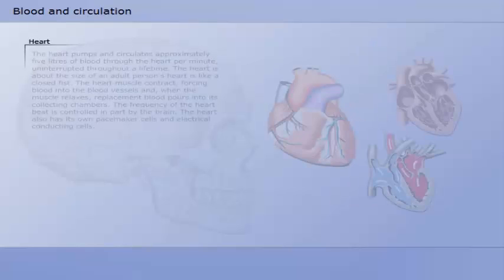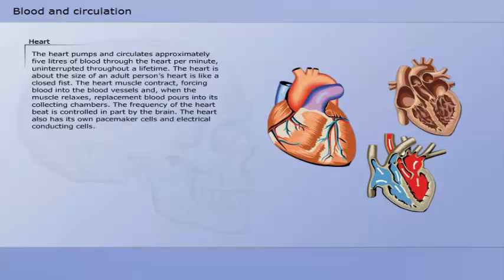The blood consists of plasma, red and white blood cells, platelets, and proteins. The red blood cells transport the oxygen and carbon dioxide. White blood cells help fight infection.